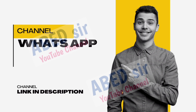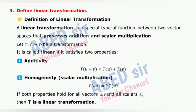Next Important Short Question 3: Define linear transformation. A linear transformation is a special type of function between two vector spaces that preserves addition and scalar multiplication. Let T: V→W be a transformation. It is called linear if it satisfies two properties: (1) Additivity: T(u + v) = T(u) + T(v). (2) Homogeneity (scalar multiplication): T(ku) = kT(u). If both properties hold for all vectors u and all scalars k, then T is a linear transformation.